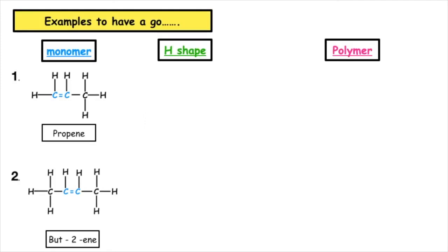So here are some examples for you to have a go at. Remember you have to change the monomer unit into the H shape before drawing your polymer chain and naming your monomer. So if you want to pause the video and have a go, when you're ready, I will pop up the correct answers.